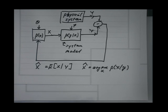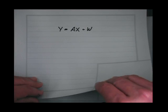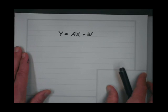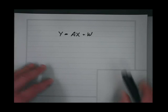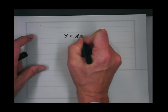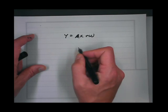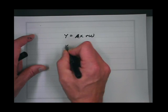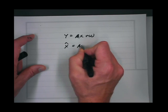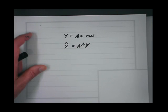A conventional solution to y = Ax + w is x-hat equals A-transpose y. That's the matched filter, or sometimes what they call back-projection.